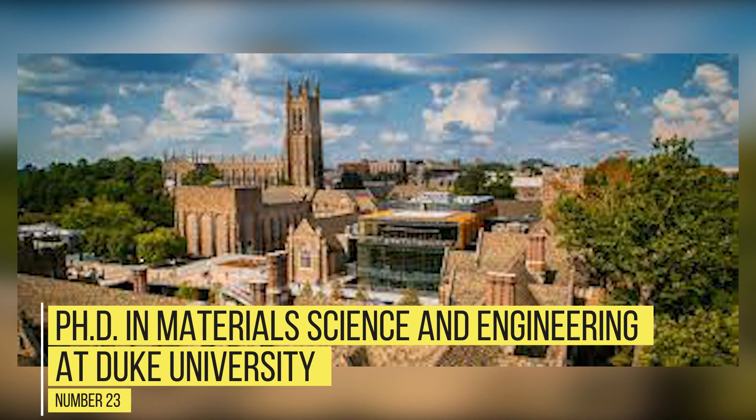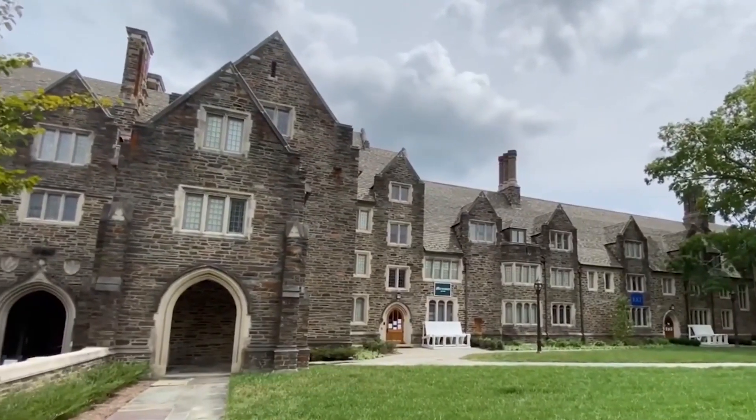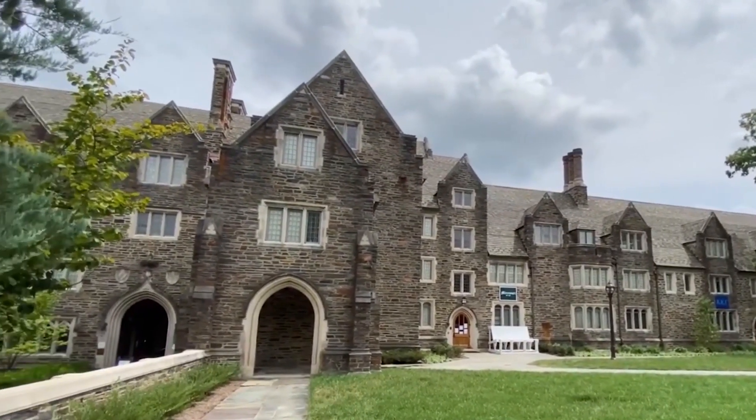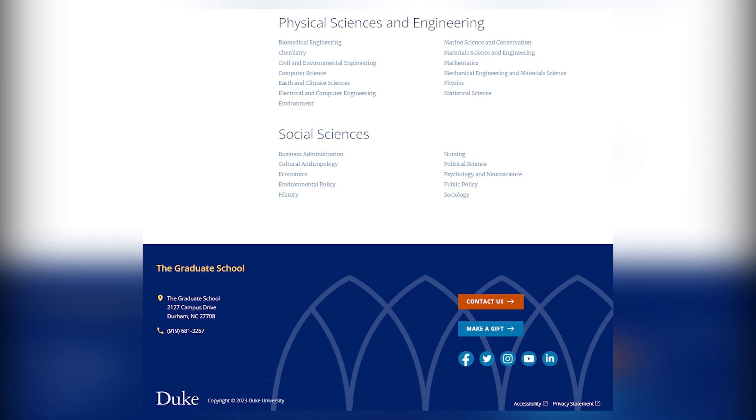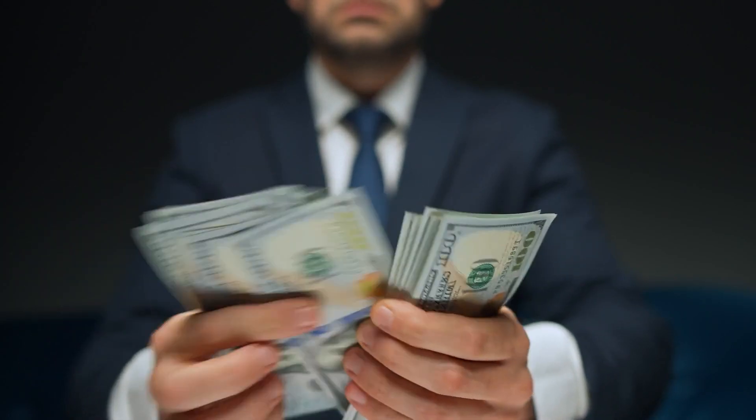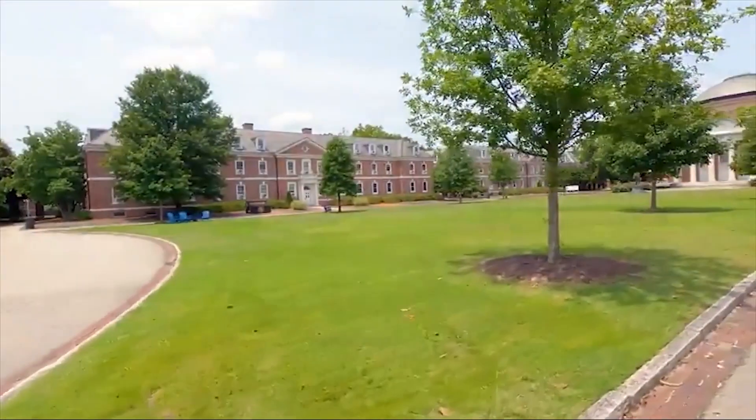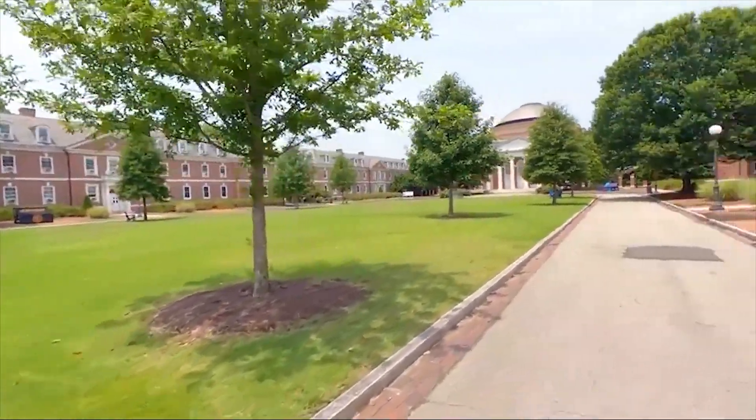Number 23: PhD in Materials Science and Engineering at Duke University. Doctoral students at Duke University in North Carolina studying Materials Science and Engineering receive full tuition, a stipend and fee support for the first five years. Students also receive up to six years of health insurance if they are on the Duke Student Medical Insurance Plan.